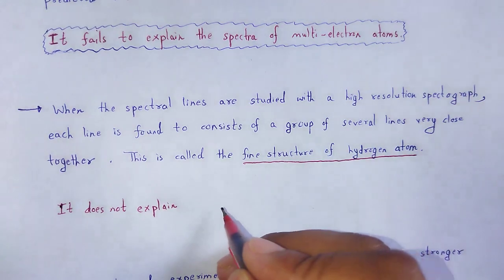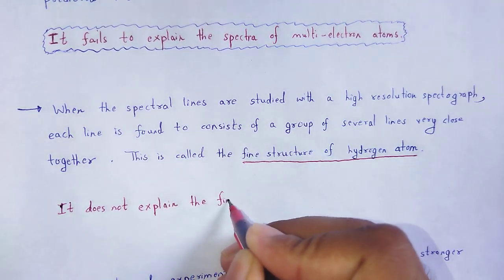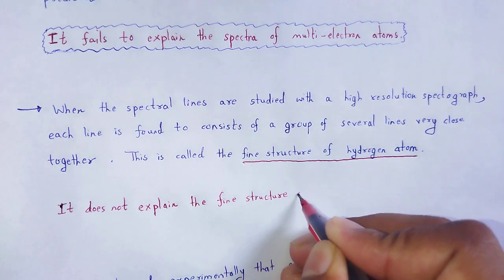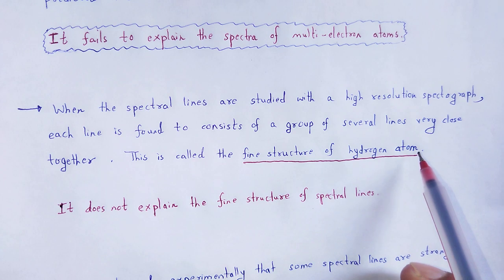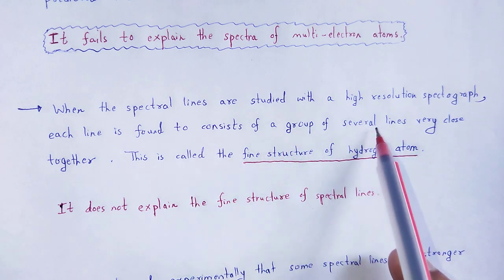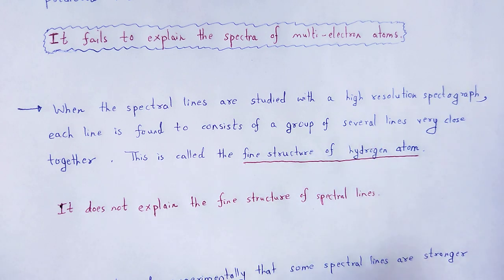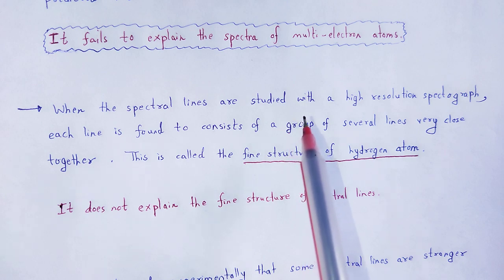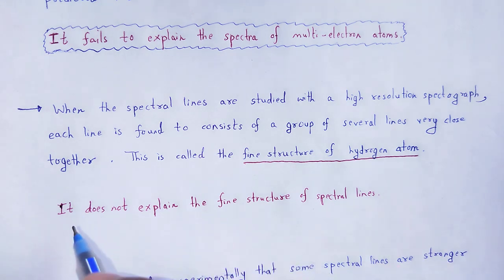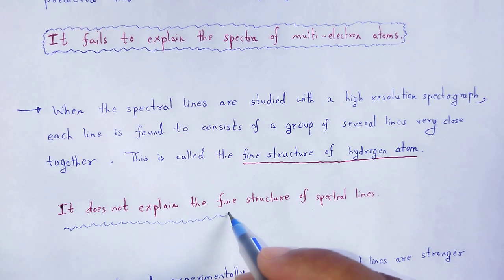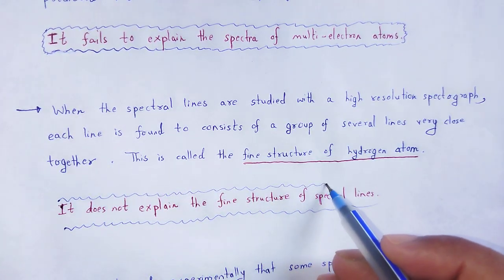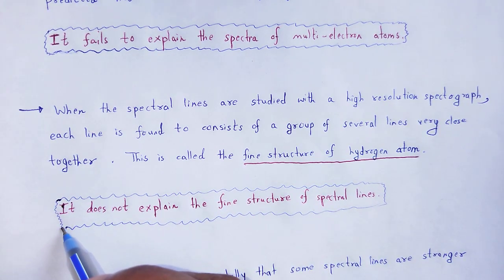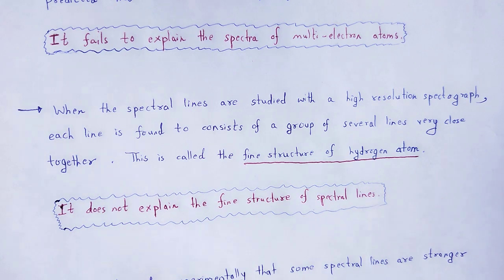Bohr's model does not explain the fine structure of spectral lines. The fine structure of the hydrogen atom is not a single line — it is a group of several lines which are very close to each other. That is, a single spectral line is exactly not a single line; it is the combination of a number of very close lines.